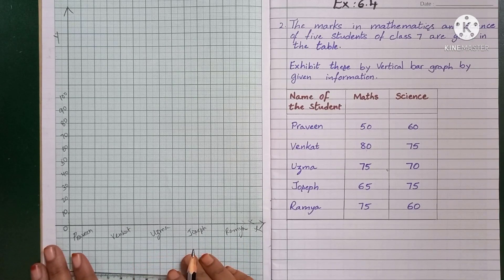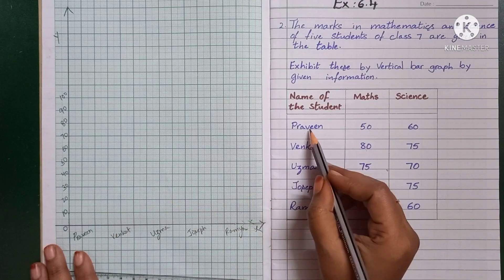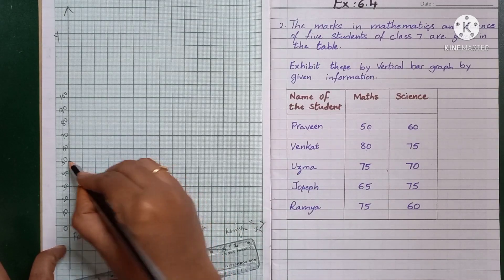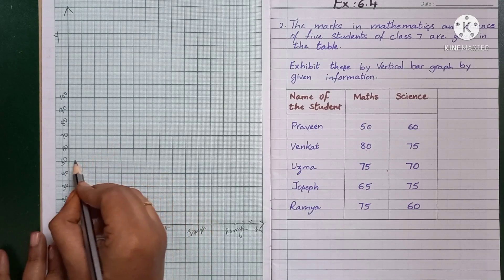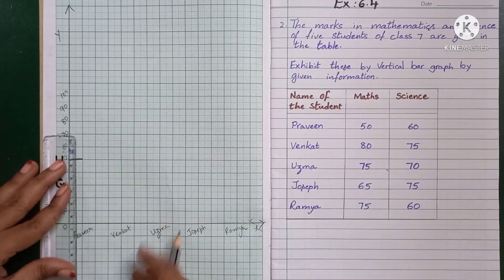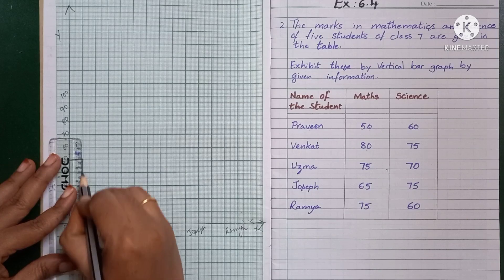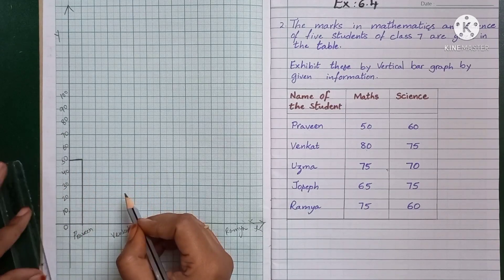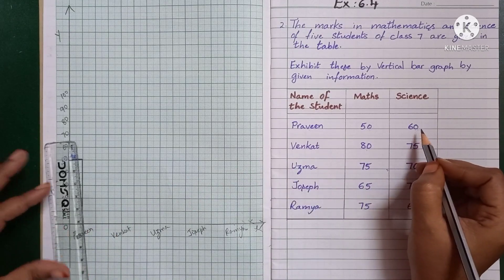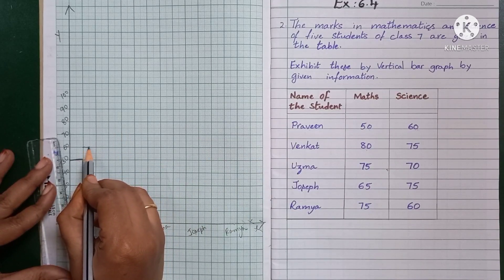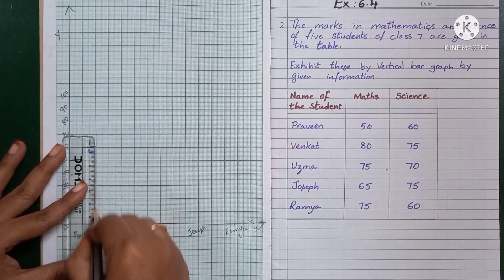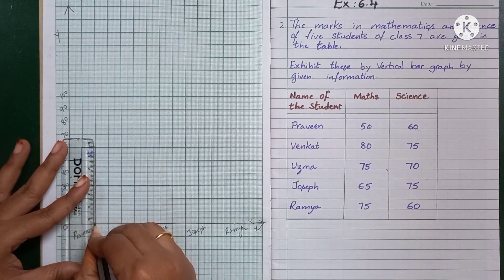Now let us plot each student's marks. Praveen's marks in mathematics are 50. On the y-axis, 50 is here, so we mark up to 50 and draw a rectangular bar for Praveen's math marks. Next, Praveen's science marks are 60. We mark up to 60 and draw another rectangular bar adjacent to the first one.